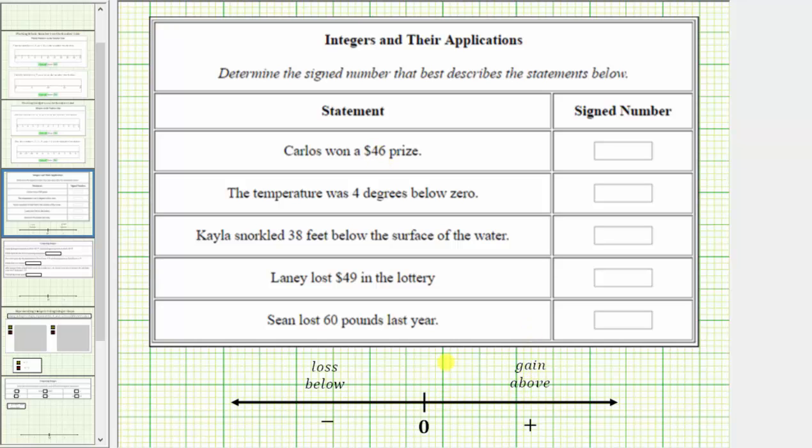If he was to lose $46, we would use negative 46 to represent the loss of money. But because he won $46, the number that best describes the statement is positive 46.